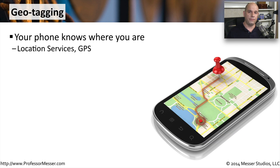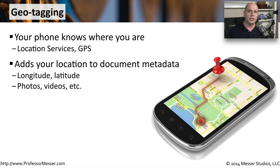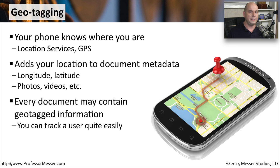The location services functionality on our phones and tablets always know where we are. It uses a number of different mechanisms to narrow down where you happen to be — it might be GPS, it might be using the wireless network you're communicating with, or it may triangulate where you are based on your mobile provider's antennas. In any case, your device is going to keep track of everywhere you go, and it's going to add this device location information to the metadata of the documents you create. If you take a picture or store a document, the location of where you created that picture and where you saved that document is going to be included with the information that is sent and stored on your device. This means that anybody who receives that document can look through the metadata and determine the longitude and latitude of where you happen to be.